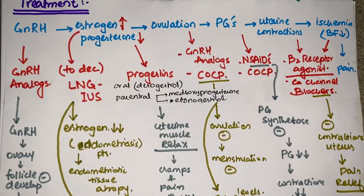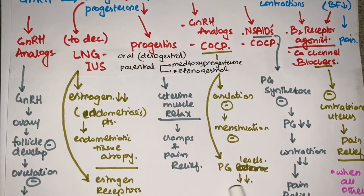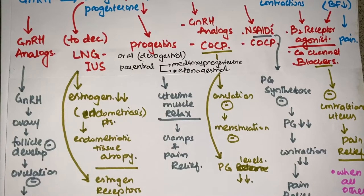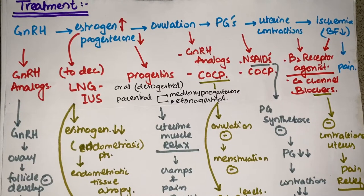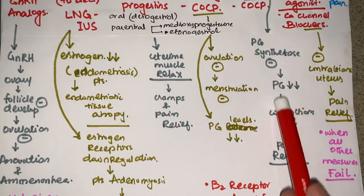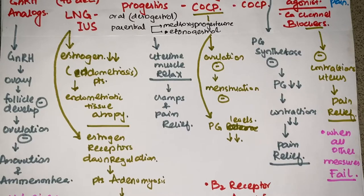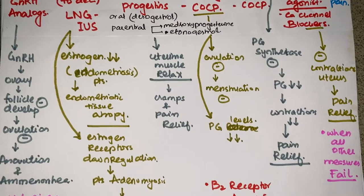To inhibit ovulation, the main drug is combined oral contraceptive pills (COCPs). They inhibit ovulation and thereby inhibit menstruation. They also decrease progesterone levels, addressing the underlying mechanism. GnRH analogues act at this step too, via the mechanism already discussed. Acting on prostaglandins, NSAIDs are prostaglandin synthetase inhibitors, reducing prostaglandin synthesis, decreasing uterine contractions, and relieving pain. NSAIDs are the first-line therapy — options include aspirin and mefenamic acid.